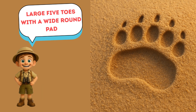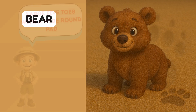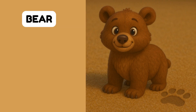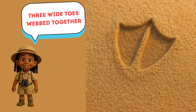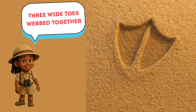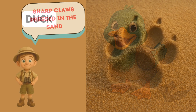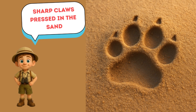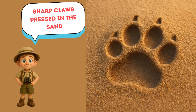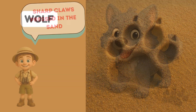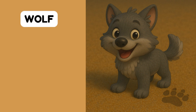Whose footprints are those? Large five toes with a wide round pad — that's a bear track. Whose footprints are those? Three wide toes webbed together — that's a duck track. Whose footprints are those? Sharp claws pressed in the sand — that's a wolf track.